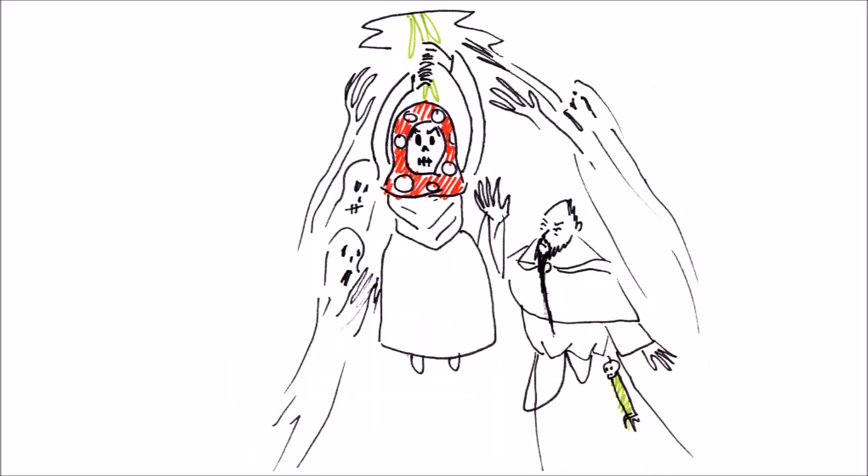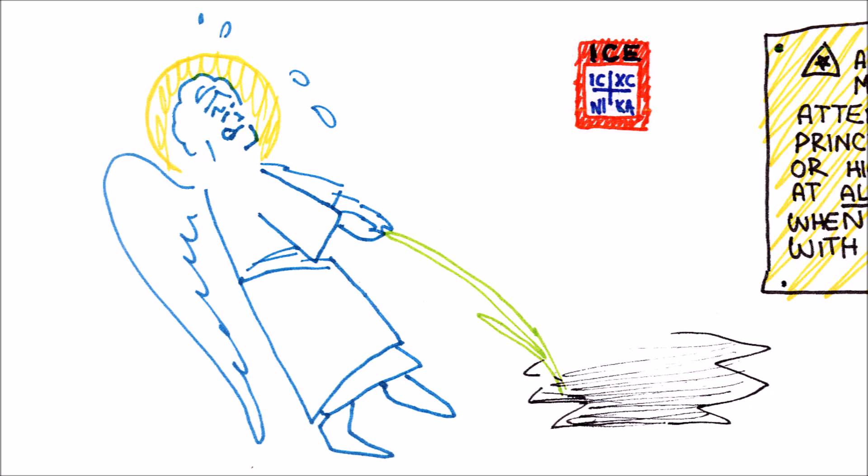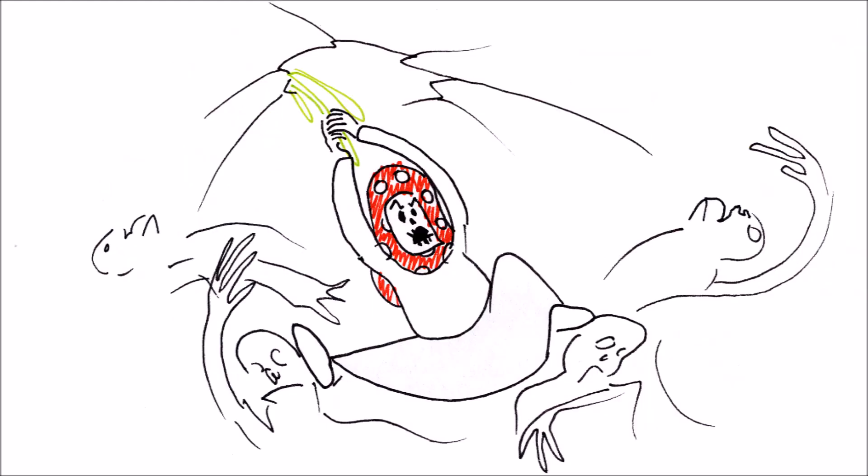However, other damned souls all flock to the onion and grab it as well. The guardian angel begins to pull, but the woman starts kicking and screaming, This is my onion, I gave it, you can't have it, as she tries to kick other souls away from the stem.